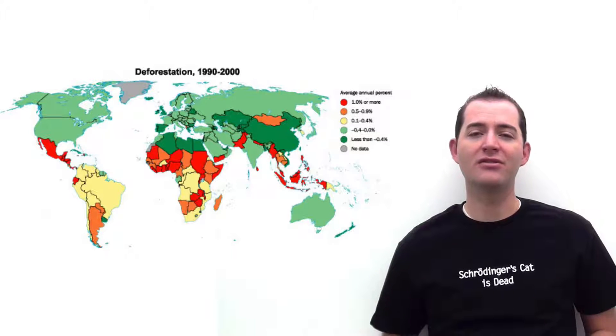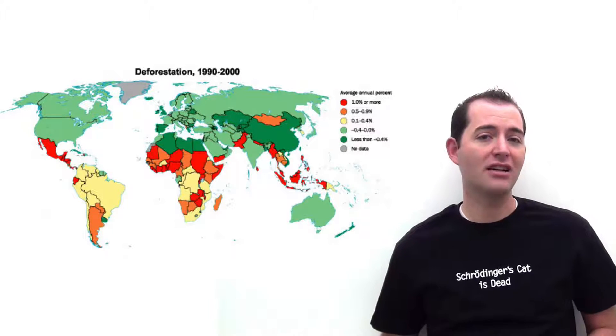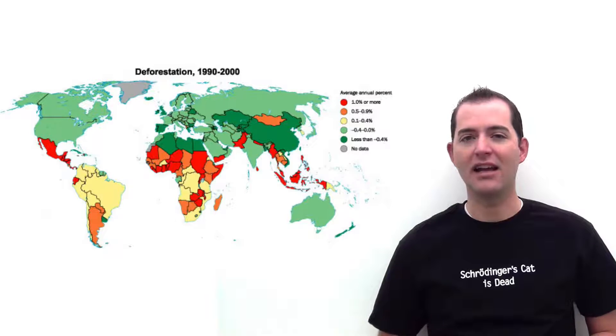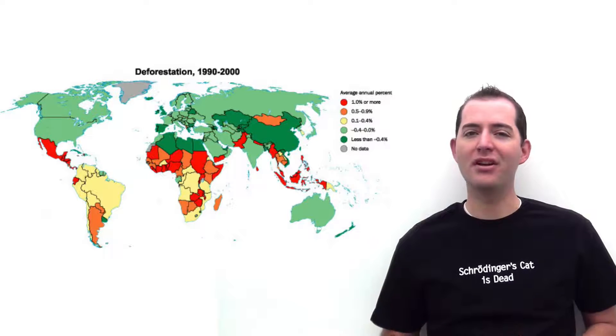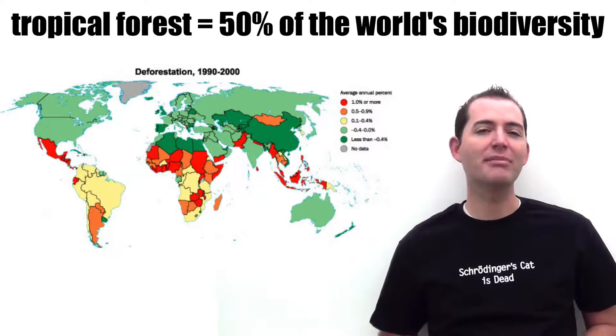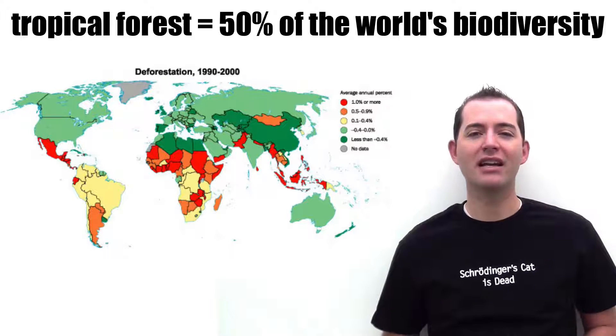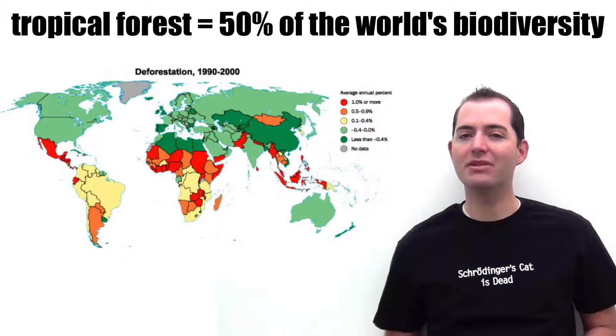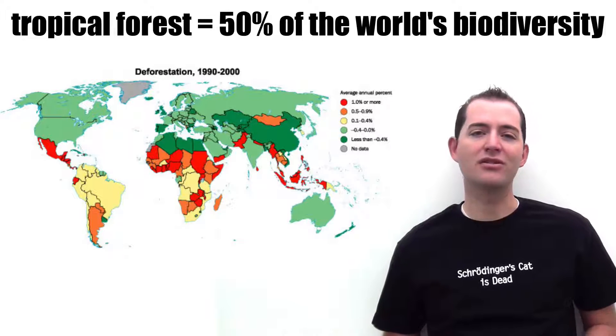Habitats are converted to be used for agriculture, livestock, roads, and cities. It's important to note that tropical forests are believed to represent 50% of the world's biodiversity. This type of habitat loss generally affects larger species the most, which have a larger range in order for them to survive.